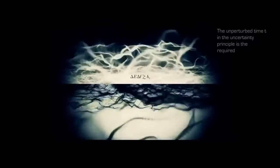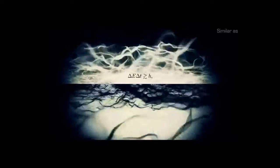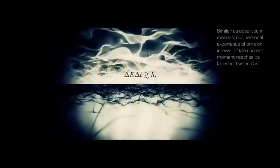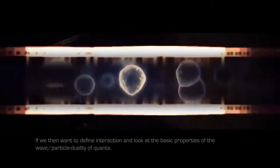The unperturbed time T in the uncertainty principle is the required time or cycle for quanta to exist. Similar as observed in mesons, our personal experience of time or interval of the current moment reaches its threshold when C is cancelled out by its anti-C. C's interpretation of this single self-annihilating moment is framed within an abstract arrow of time. If we then want to define interaction and look at the basic properties of the wave-particle duality of quanta, all interactions would consist of interference and resonance.